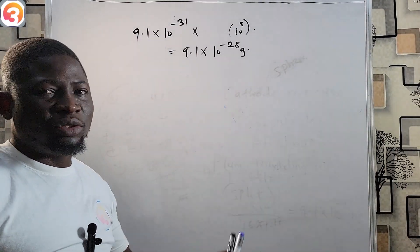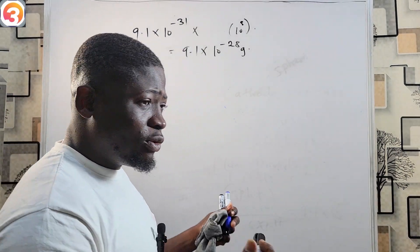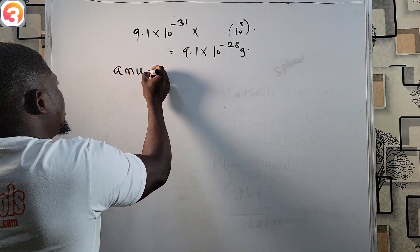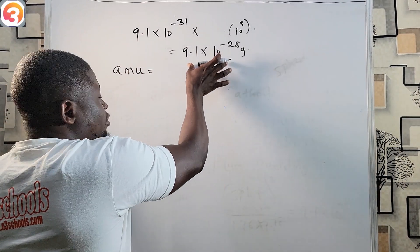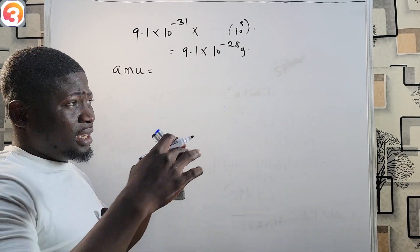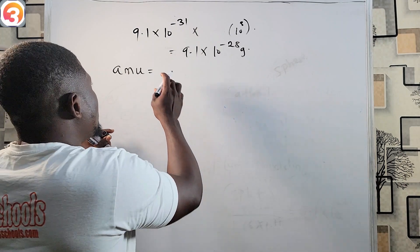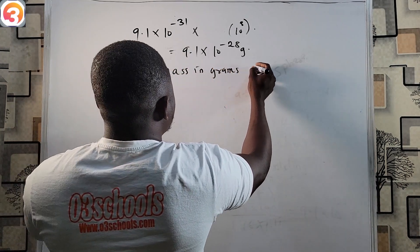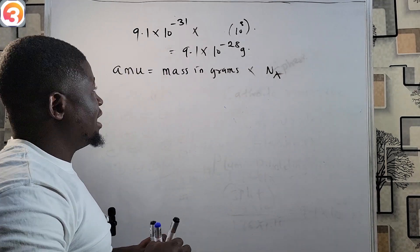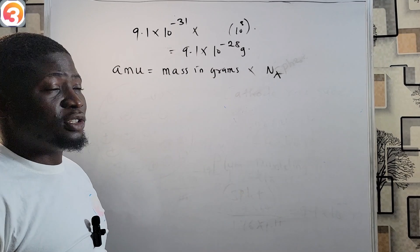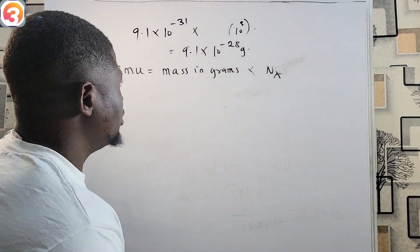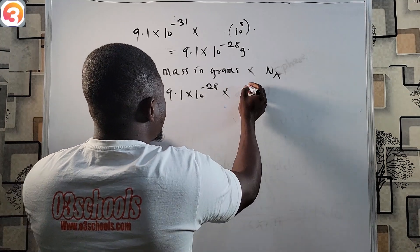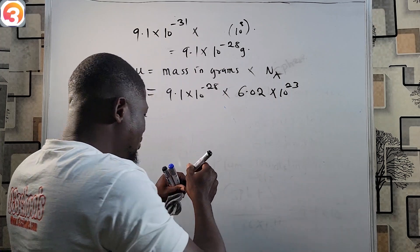Now let us get the mass of an electron in atomic mass units (AMU). To convert mass in grams to atomic mass units, simply multiply the mass in grams by Avogadro's constant. So we calculate: 9.1 × 10⁻²⁸ grams × 6.02 × 10²³.